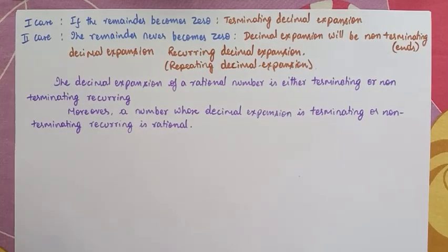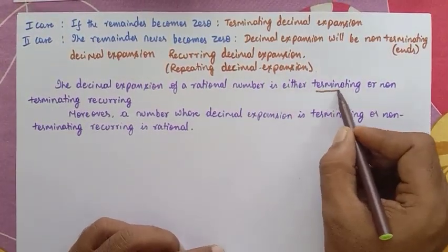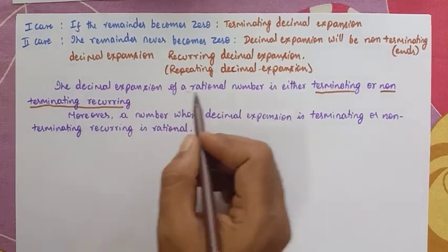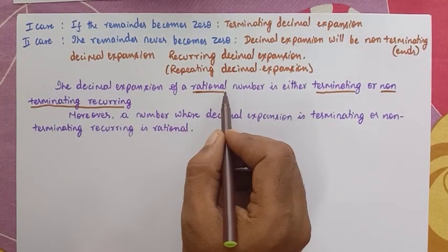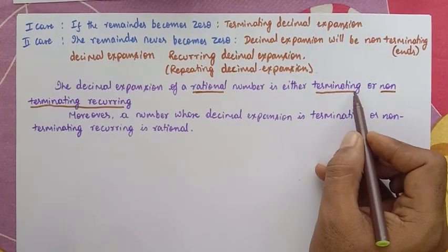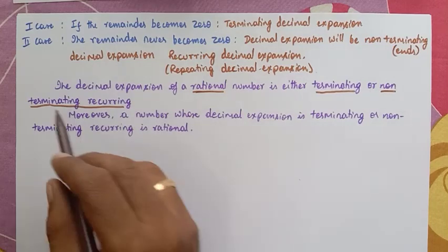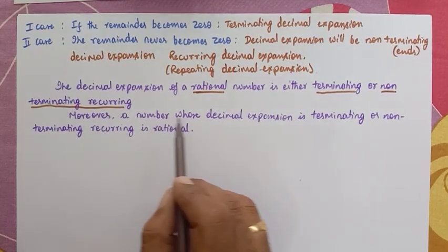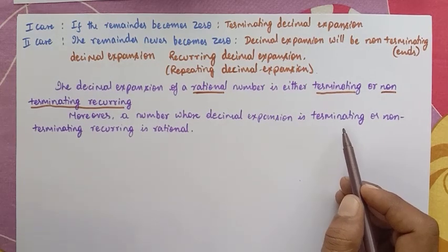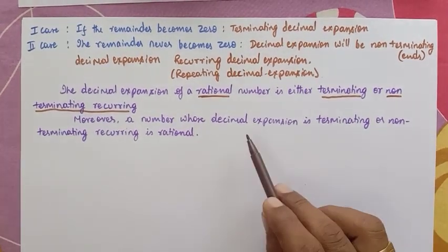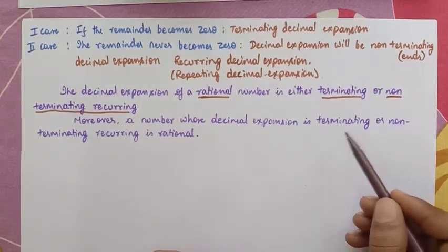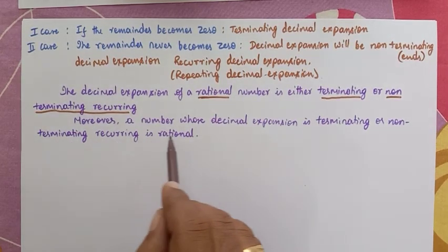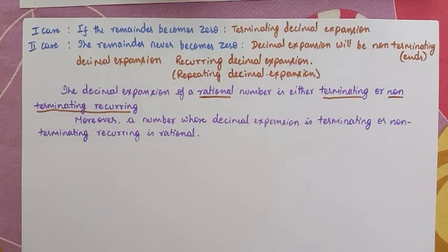The decimal expansion of a rational number is either terminating or non-terminating recurring. You should note this down: if a number has a decimal expansion and it terminates, it is a rational number; if it is non-terminating but recurring, it is also a rational number. Other than that, there is no chance.